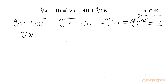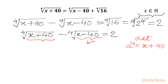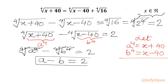So we have: 4th root of (x plus 40) minus 4th root of (x minus 40) equals 2. Now I will use substitution. Let the first radicand equal a⁴, so a⁴ = x plus 40, and the second radicand equal b⁴, so b⁴ = x minus 40. Our equation becomes a minus b equals 2. I'll call this equation number 1.